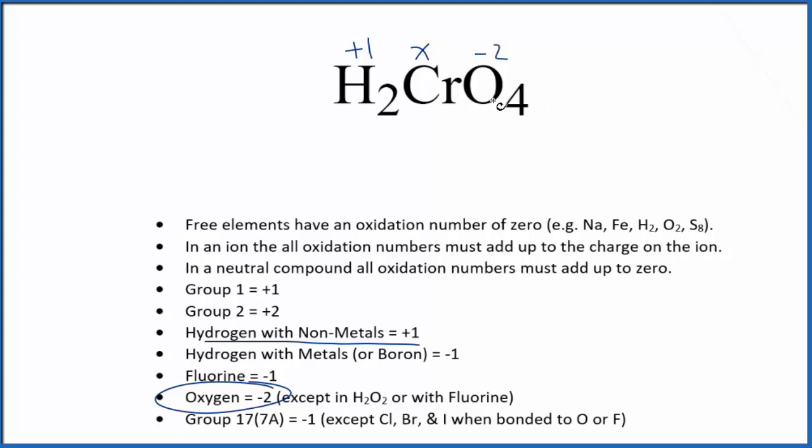And this is going to give us enough information to figure out the oxidation numbers for each element here in H2CrO4. That's because this is a neutral compound, it's not an ion. So all the oxidation numbers, they add up to zero.